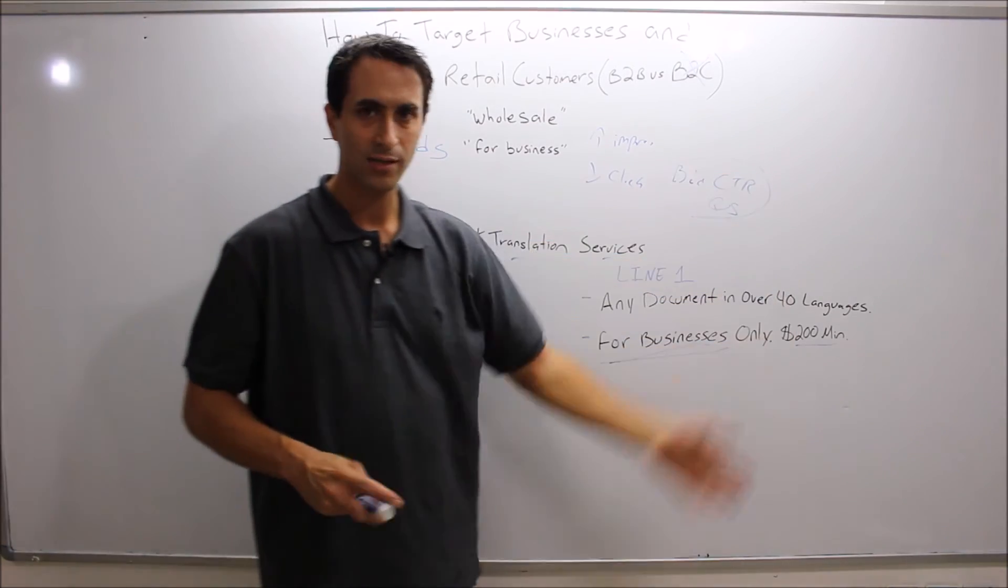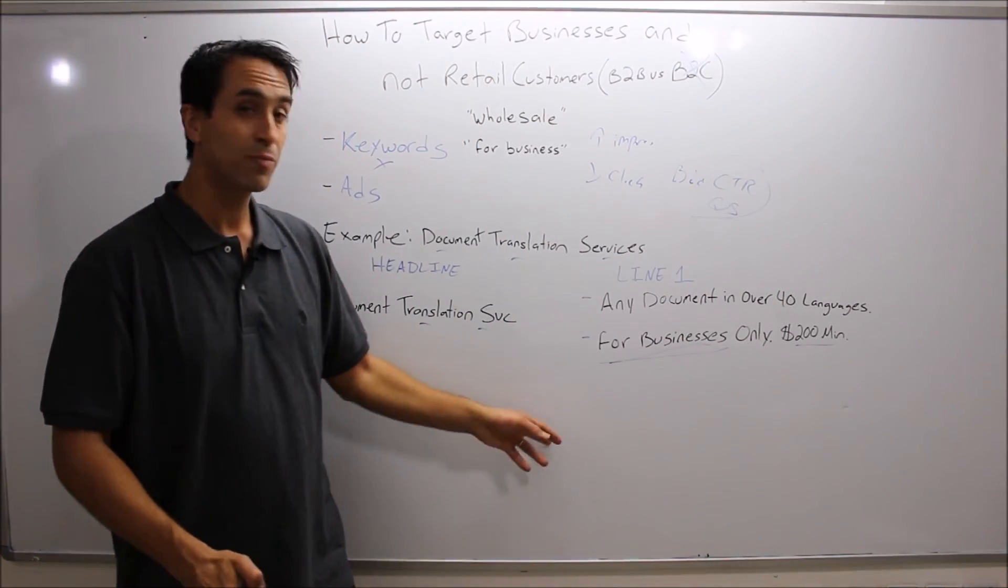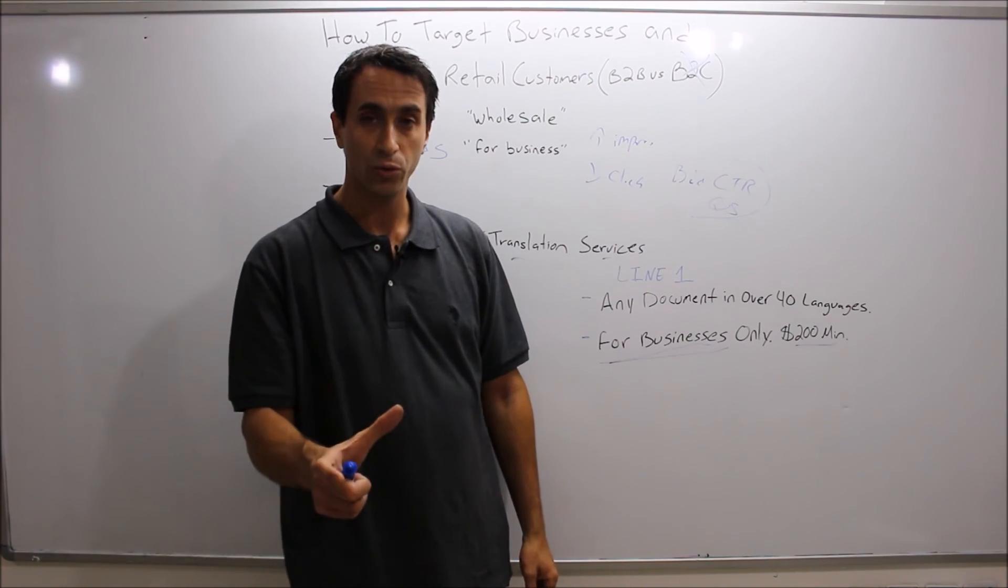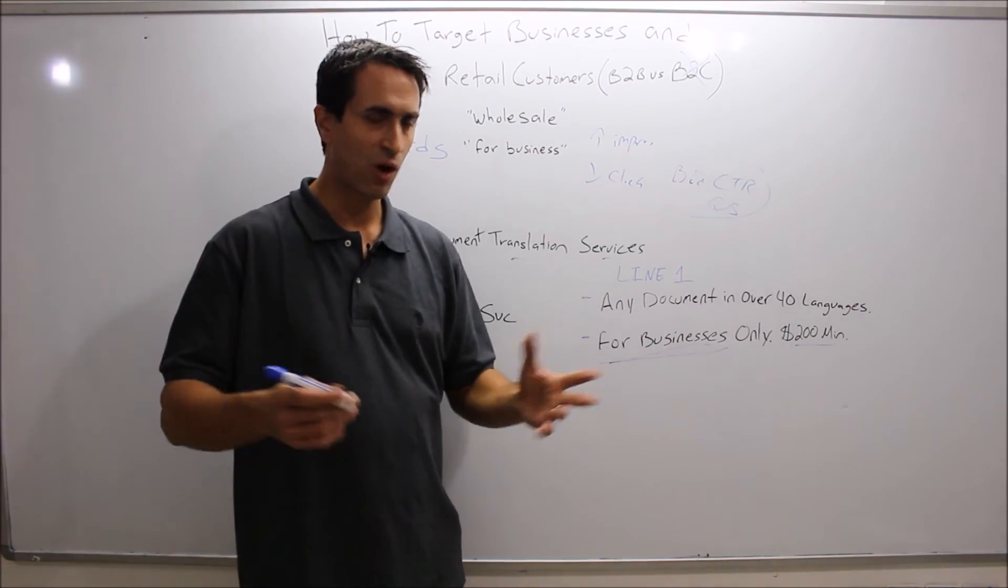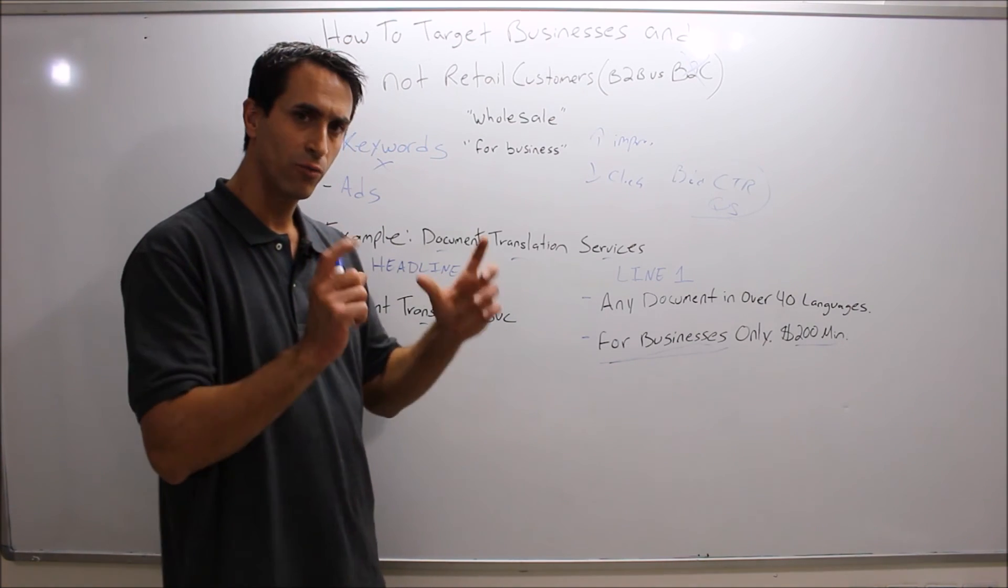Line two could say something more generic - fast turnaround, things like that. Display URL could say 'for business only' if you'd like. Again, with display URL, you can use it however you want after you use your root domain.